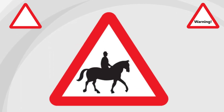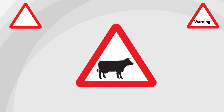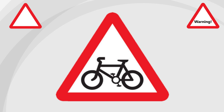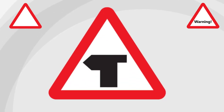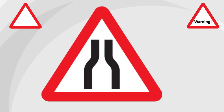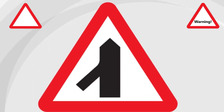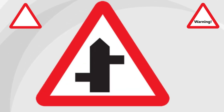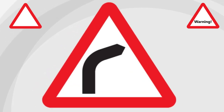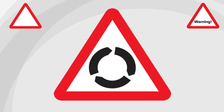Wild horses or ponies. T-junction with priority over traffic coming from the right. Road narrows on the right. Road narrows on both sides. End of dual carriageway. Crossroads. Road emerges from the left ahead. Staggered junction. Bend towards the right. Junction on the right. Junction on the bend ahead. Double bend — first to the left, however the symbol can be reversed. Roundabout ahead.